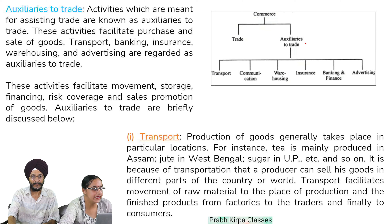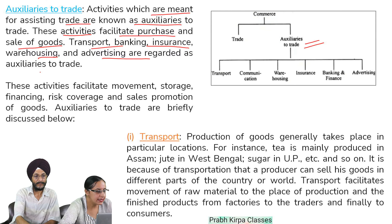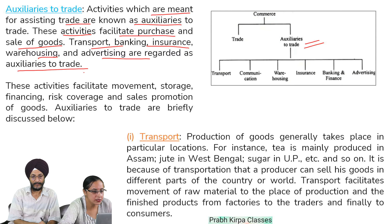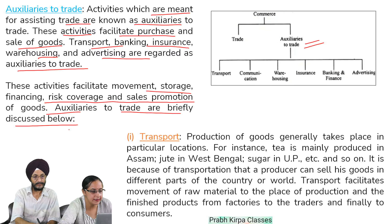Auxiliaries to trade: activities which are meant for assisting trade are known as auxiliaries to trade. These activities facilitate purchase and sale of goods. Transport, banking, insurance, warehousing, and advertising are regarded as auxiliaries to trade. These activities facilitate movement, storage, financing, risk coverage, and sales promotion of goods.